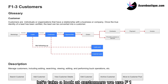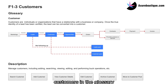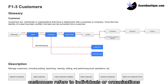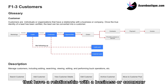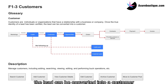We use F1-3 to represent the identifier of this feature set, customers. In the glossary, customers refers to individuals or organizations that have a relationship with a business or company. Once the true identity of a lead has been verified, the lead can be converted into a customer.